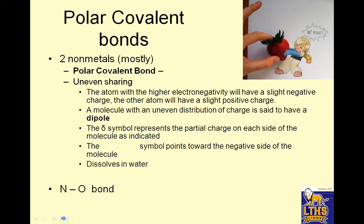Polar covalent bonds are two nonmetals, mostly. There's uneven sharing. The atom with the higher electronegativity will have a slight negative charge. The other atom will have a slight positive charge. A molecule with an uneven distribution of charge is said to have a dipole. Di means 2, pole means end. The delta symbol represents the partial charge on each side of the molecule. The arrow symbol points towards the negative side of the molecule. And these dissolve in water.